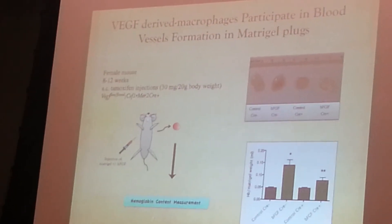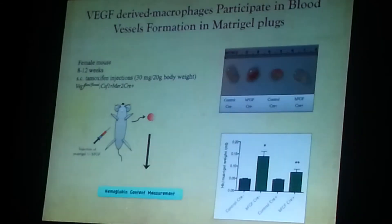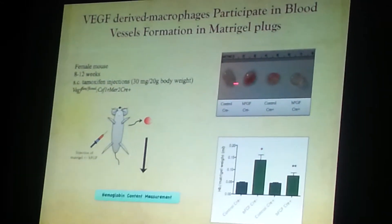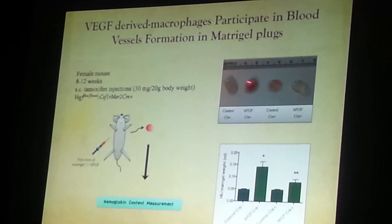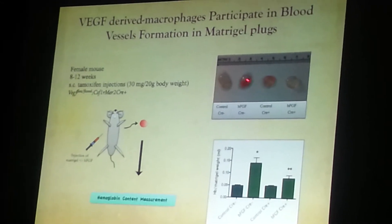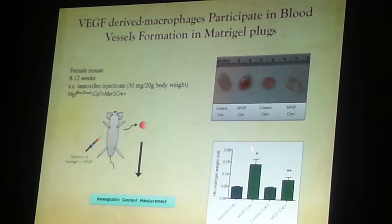Again, the picture of the plug there, you can see that in the presence of basic FGF, which is our angiogenic factor, there is a formation of blood vessels, which correlate with the hemoglobin content.